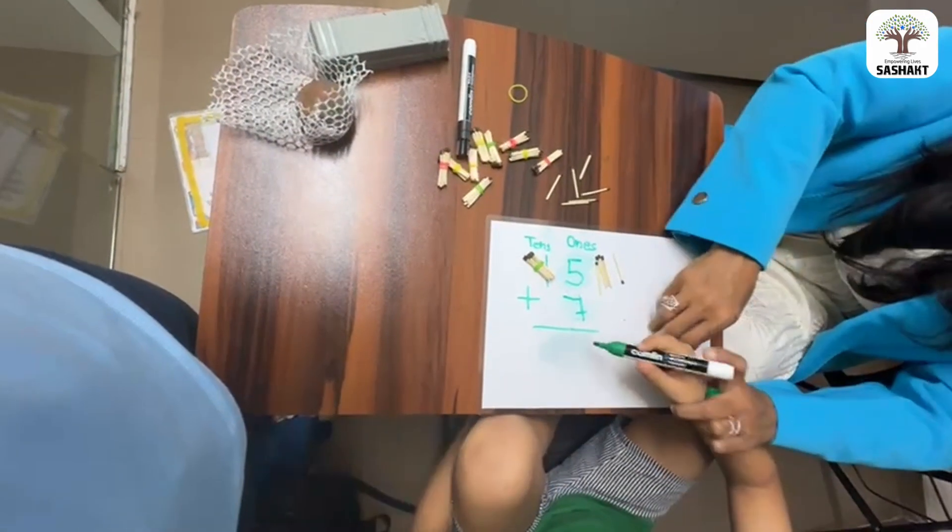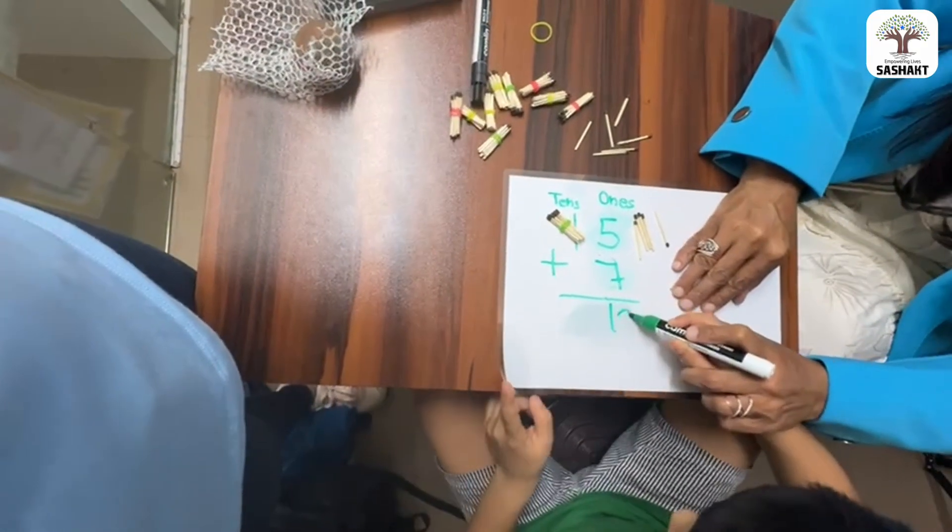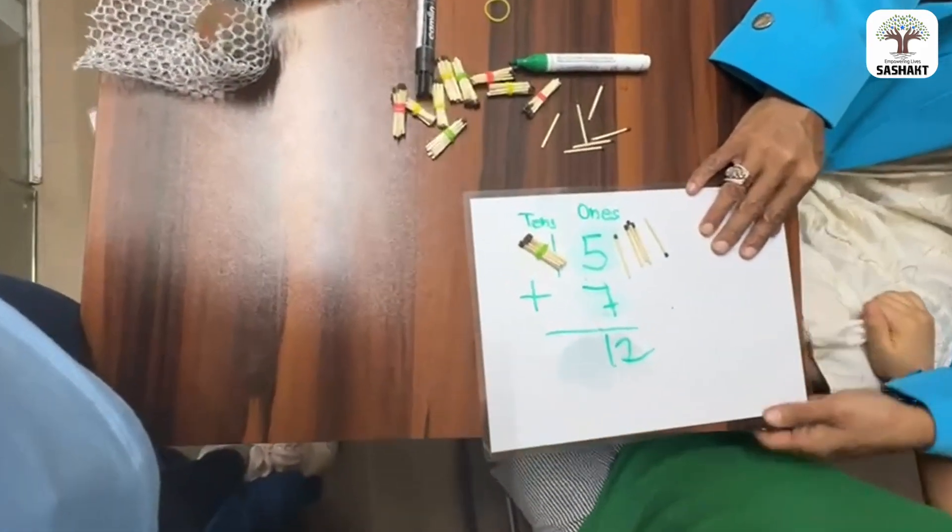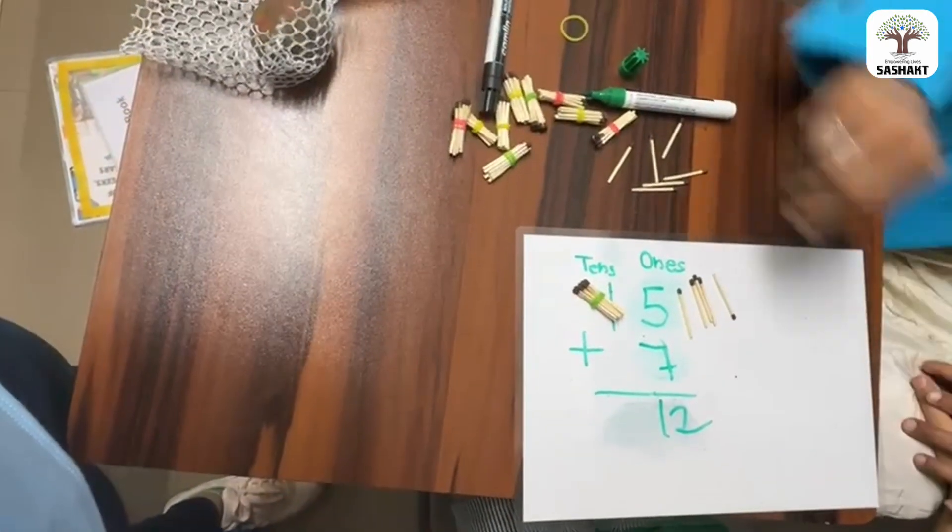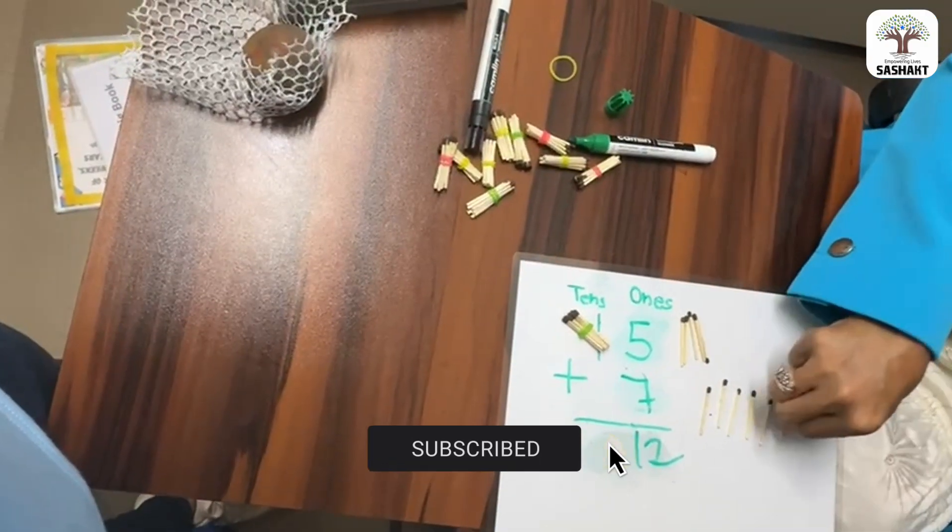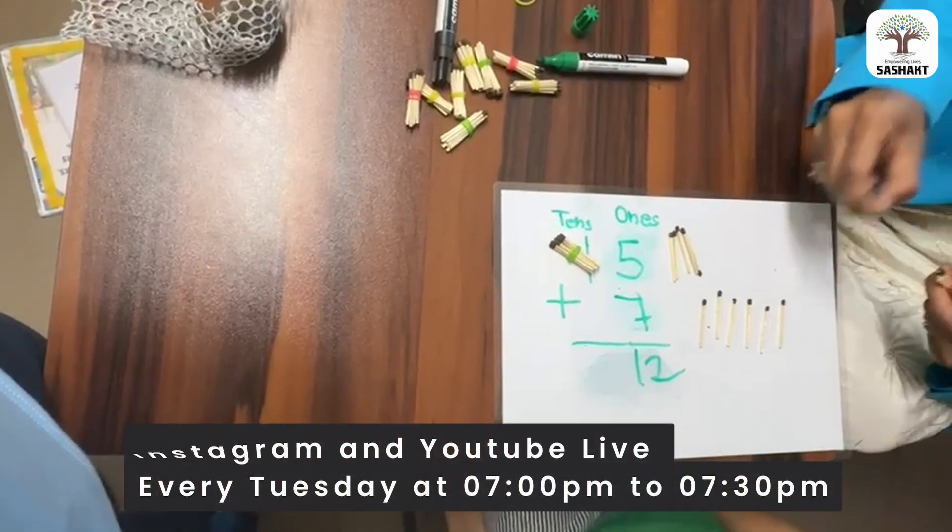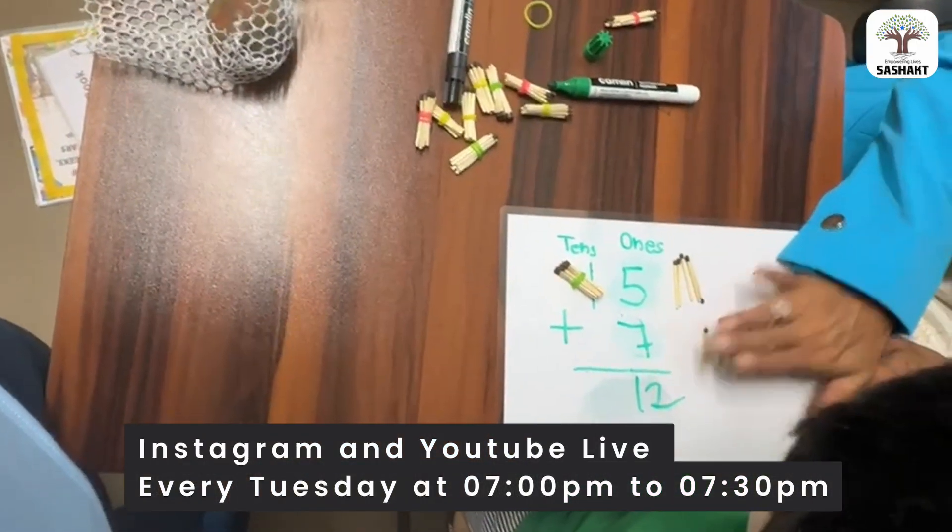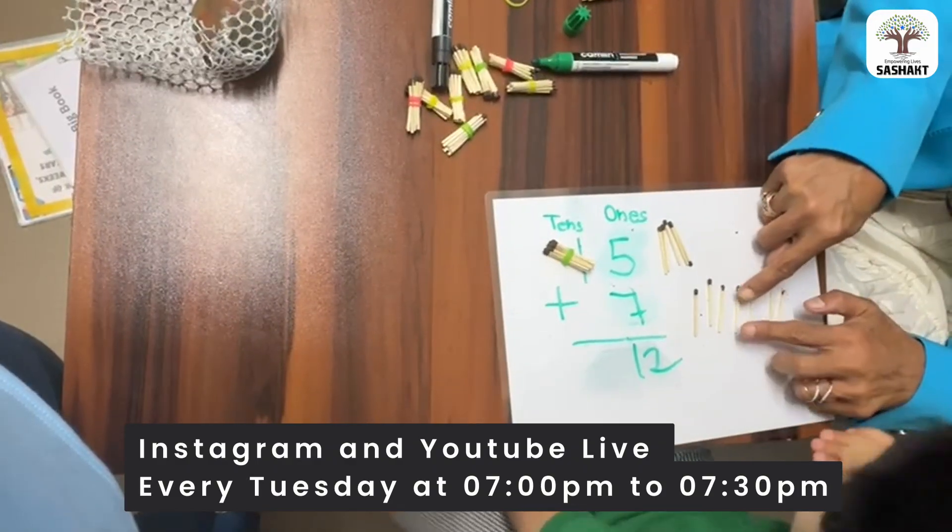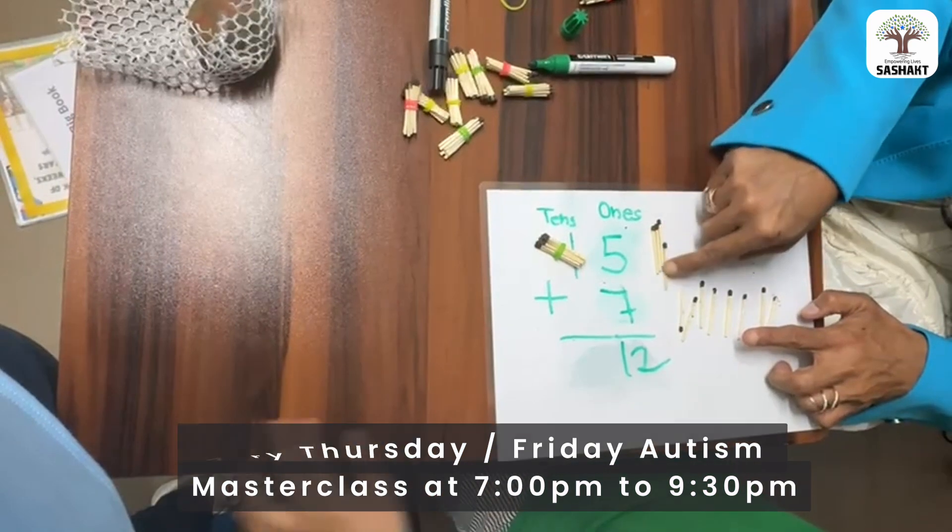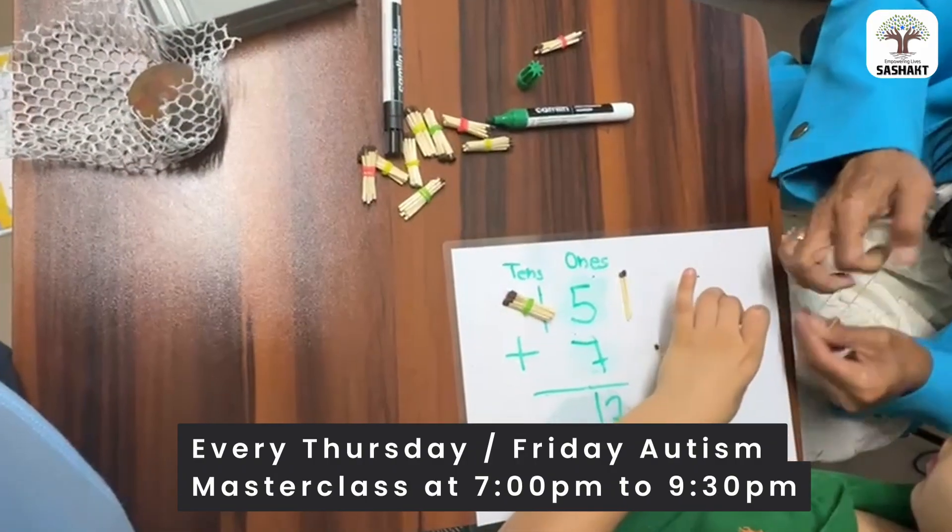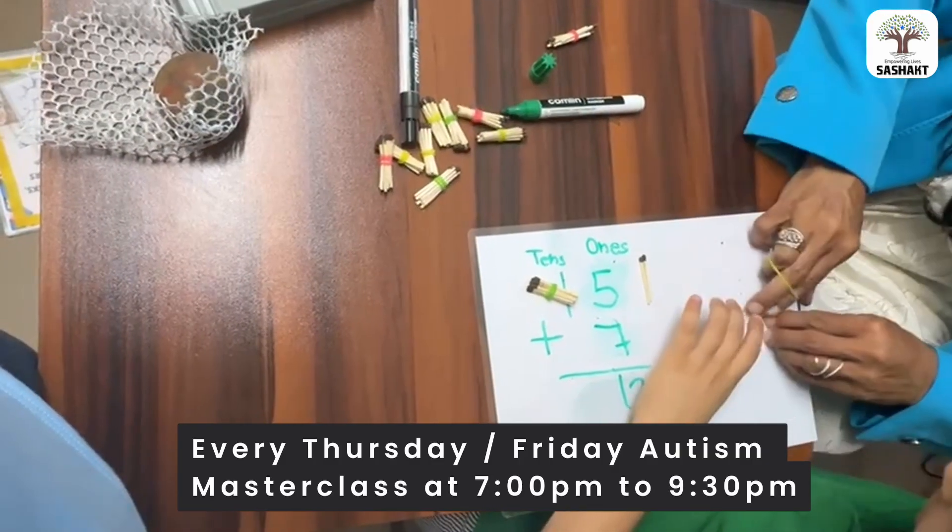So, here it is. Look. 12. But we cannot write it like this. So what do we do? Wait. Sit here nicely. What do we do? No, don't show me the answer. Let's put 12 here. Okay, 5, 1, 2. Look down. 3, 4, 5, 6, and 7. That will be 7, 8, 9, 10, 11, 12. That's 12. Now, what we are going to do? Look. 1, 2, 3, 4, 5, 6, 7, 8, 9, and 10. What are we going to do with these 10? We are going to make them a bundle. You are going to make them a bundle.